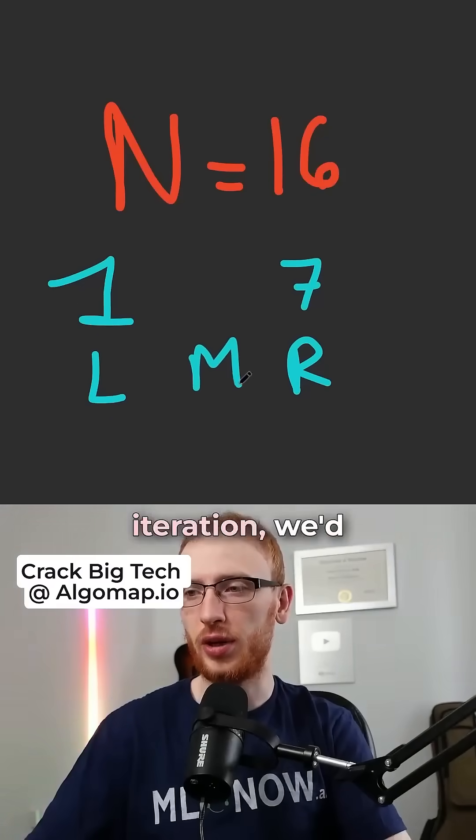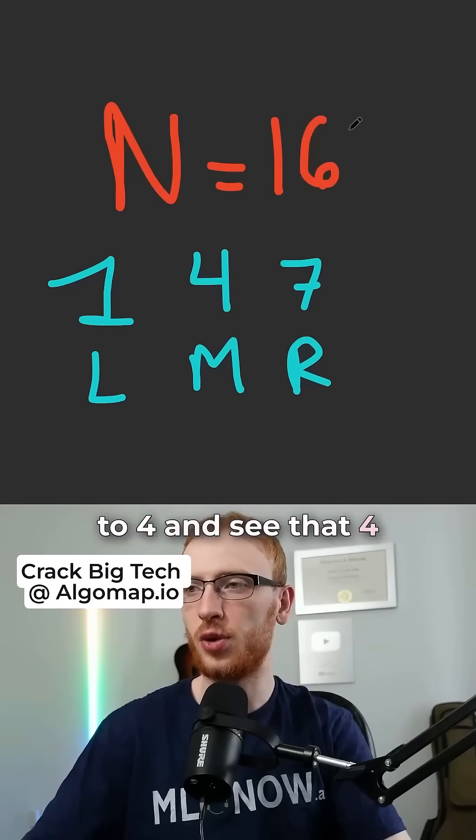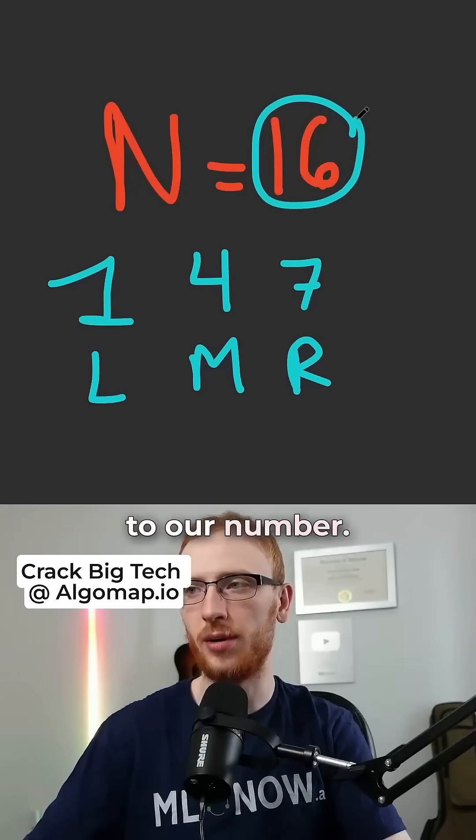On the very second iteration, we'd see that m is equal to 4, and see that 4 squared is equal to our number.